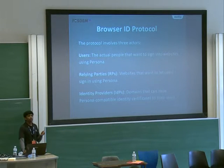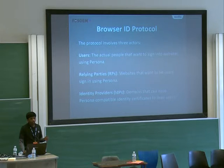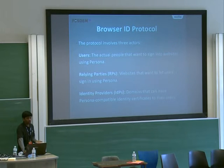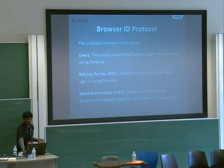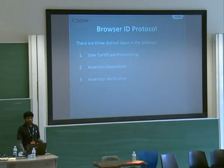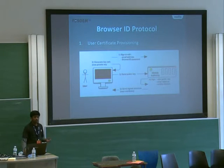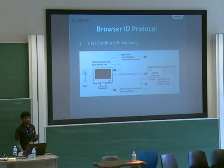Users are those who log into the web. Relying Parties are sites like WebMaker.org. Identity Providers are what we use as a login — for example, if you use yahoo.com as a login, that's the Identity Provider. Here's how it works in three steps: when you click sign in, it takes your email as input and asks for Persona's password the first time.